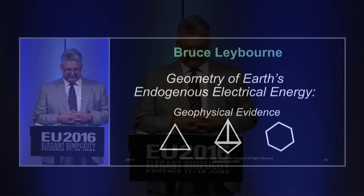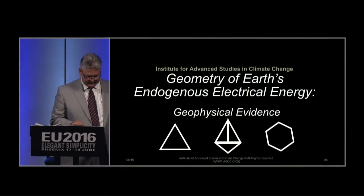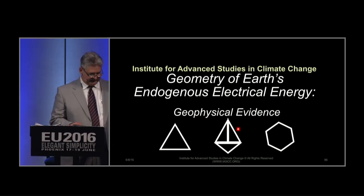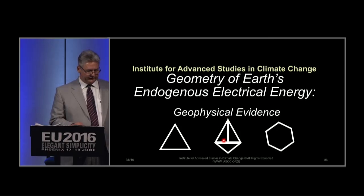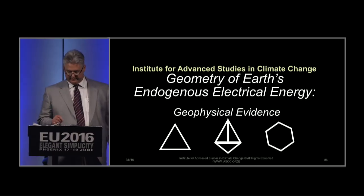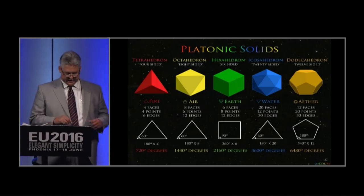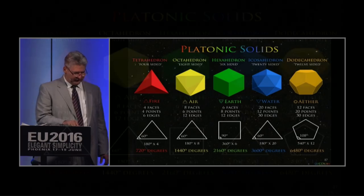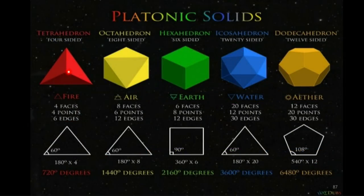The geophysical evidence is going to be somewhat tied to these. This is your basic tetrahedron — your three-sided pyramid — with your basic Y circuit at the top and a delta circuit at the bottom, this triangle at the bottom. So this is your basic building block of what I'm going to talk about today. The platonic solids — again you see the tetrahedron with the Y circuit at the top and the base of the pyramid as a delta circuit. This is your fire element.